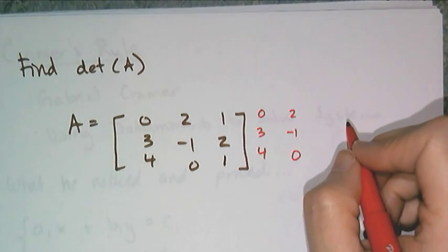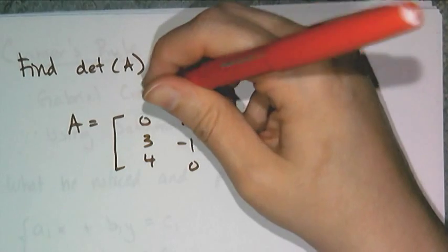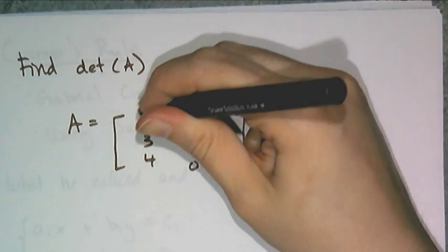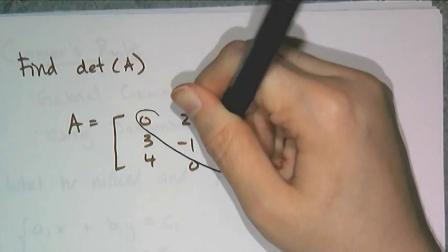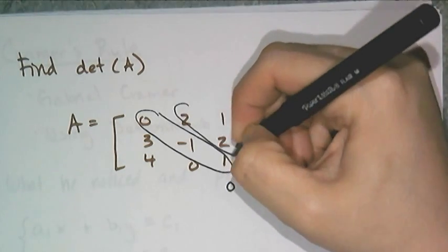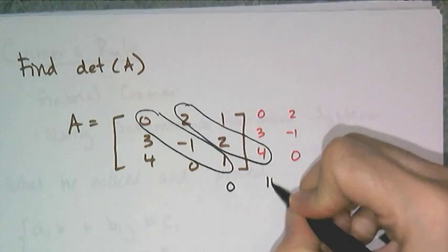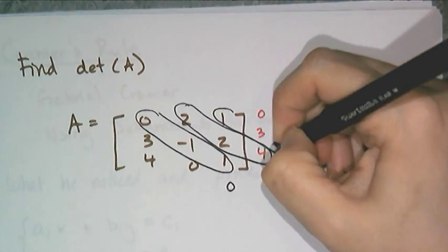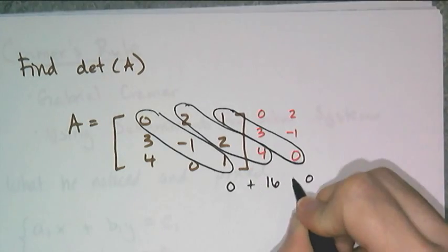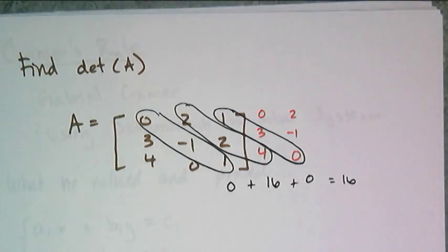And I have to find the downward products. Luckily, there are 0s in place, which makes this a lot easier if there are 0s. So downward diagonal 1 is 0 times negative 1 times 1, which is 0. And then I have 2 times 2 times 4, which is 16. And 1 times 3 times 0, which is 0. So I add all these together, and I get 16.